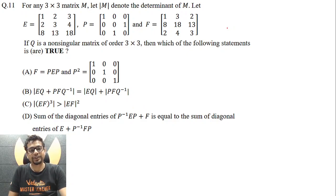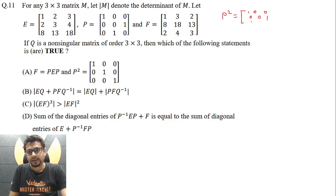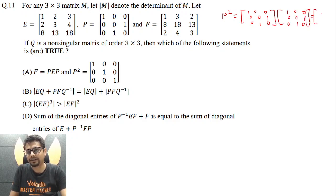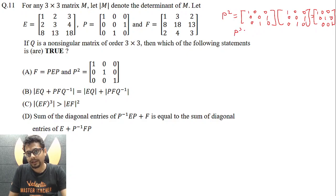Let's first consider option A. So here P is this matrix. What about P squared? It becomes [1 0 0 / 0 0 1 / 0 1 0] times itself, and if you see carefully, P squared turns out to be the identity matrix. That also means P is the inverse of itself.